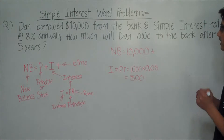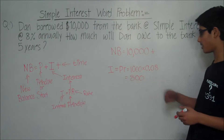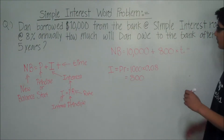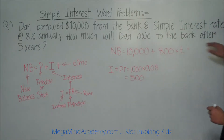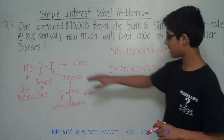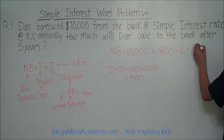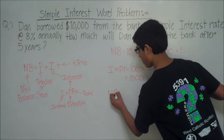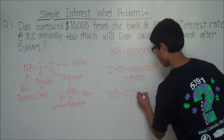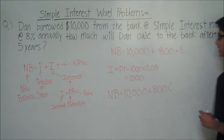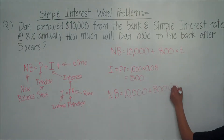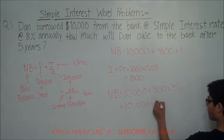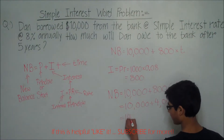This is equal to $800. So, because this is simple interest, every year they add on $800. So, the new balance is equal to 10,000 plus 800 times T, which is 5 years. We get 10,000 plus 800 times 5 is 4,000, which is equal to $14,000.